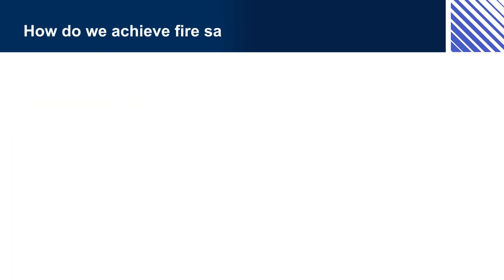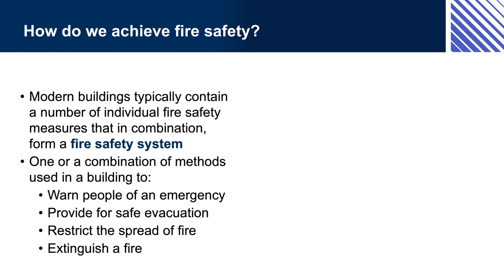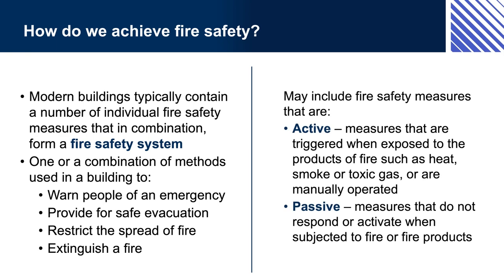How do we achieve fire safety? To achieve fire safety in buildings, the NCC prescribes minimum fire safety requirements. This is made up of individual elements that in combination form a fire safety system within the building. A fire safety system may have one or more different elements, each of which could be targeted to one of the four aims listed. Active fire safety measures are those triggered when exposed to the products of fire, such as heat, smoke, or toxic gas, or which are manually operated. Passive fire safety measures are those that do not respond or activate when subjected to fire or fire products — they are measures generally built into the building fabric and are focused on fire resistance.